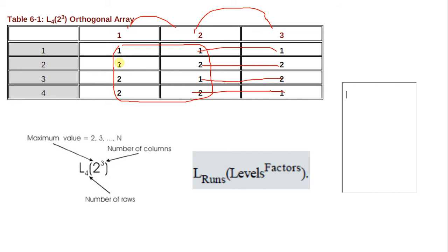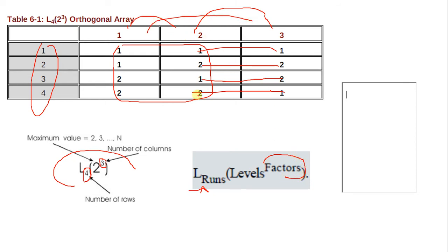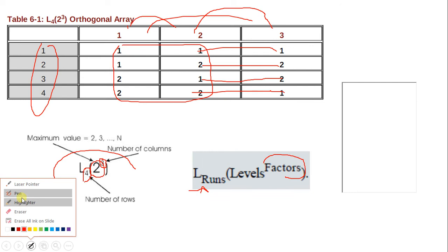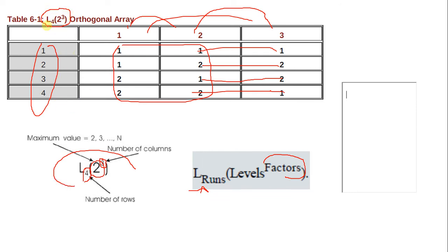This is the notation for an orthogonal array. The number four shows the number of rows, also called runs — so this orthogonal array has four runs or four rows. The superscript three shows the number of columns, also called factors — here we have three columns. The subscript two shows the number of options in each column: first column has two options, second has two options one and two, and third column also has two options.